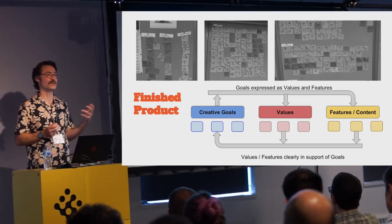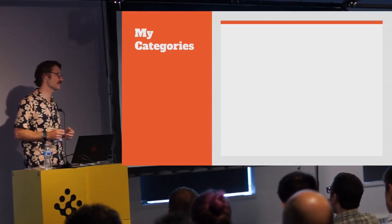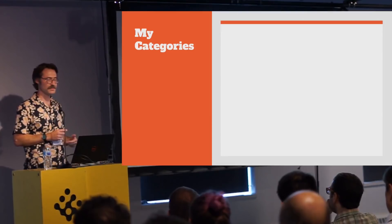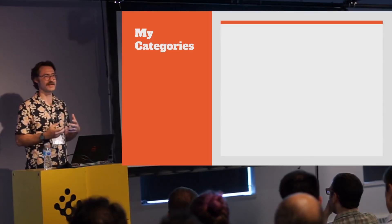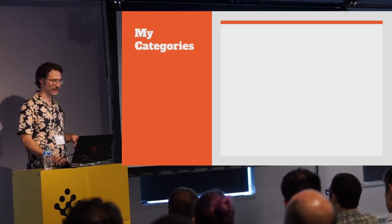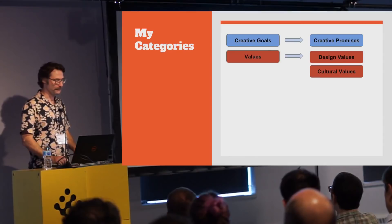What you end up with is a coherent design and direction for the game, and a team that understands why each piece is there, what it's contributing, and how they're all connected. The process varies a lot depending on the people, but also depending on the categories you use for your high and low-level concepts. I've used a lot of different frameworks and iterated on them, and I've arrived at some categories I think are pretty valuable.